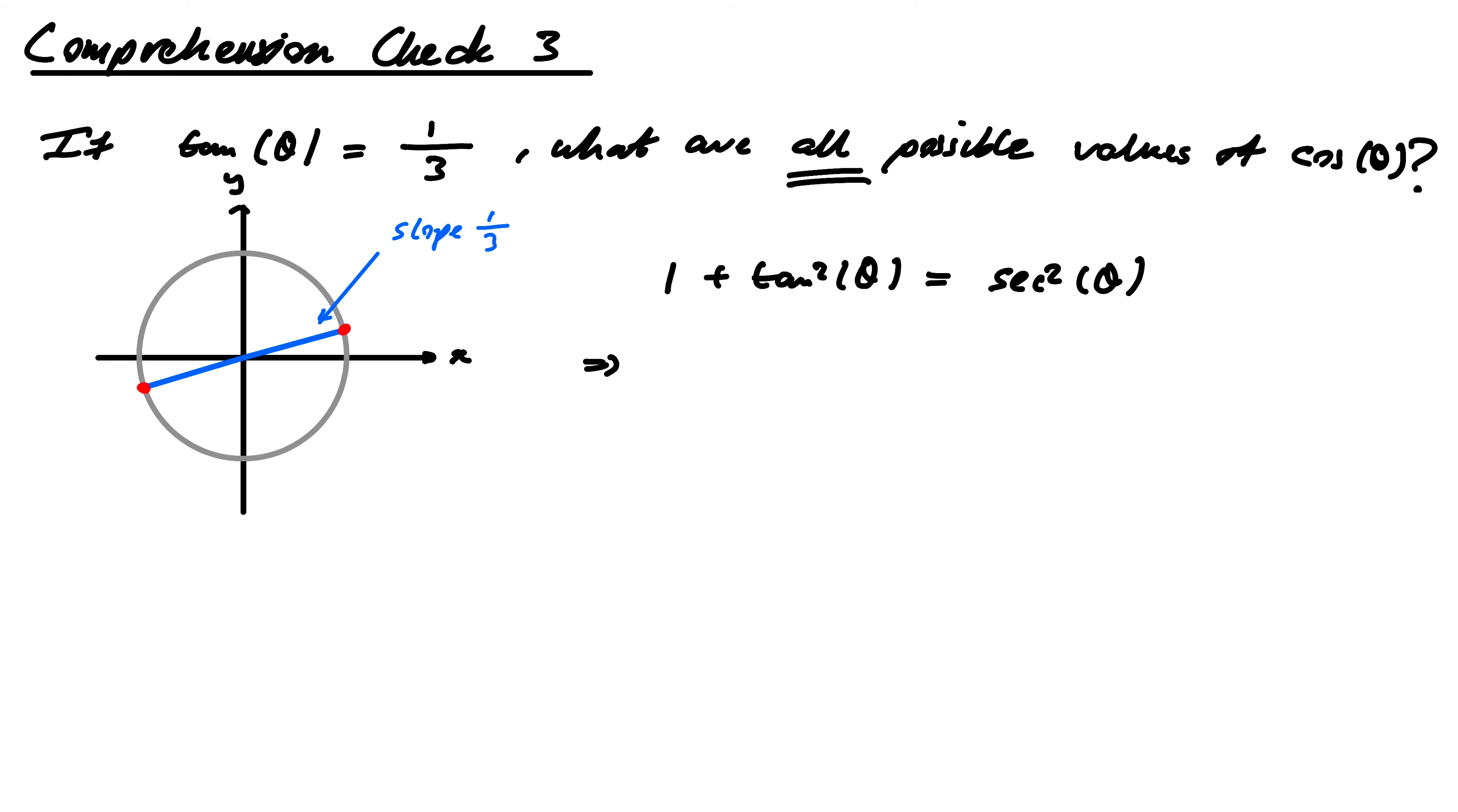So this would imply 1 + (1/3)² = sec²θ. So this would imply it would be 1/9 + 1, it would be 10/9, is that right?